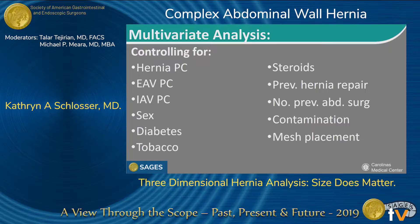We then performed a multivariate analysis controlling for the three principal component variables — hernia, extra-abdominal, and intra-abdominal — as well as sex, diabetes, tobacco use, consistent use of steroids, a history of previous hernia repair, the number of previous abdominal surgeries, the contamination of their case, and the placement of mesh.